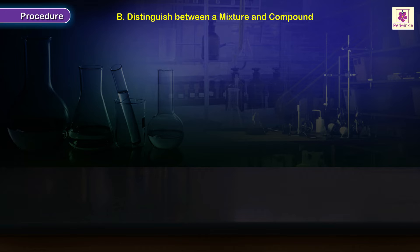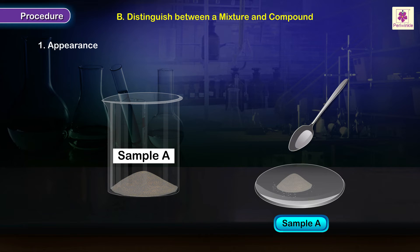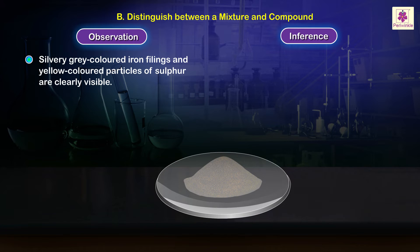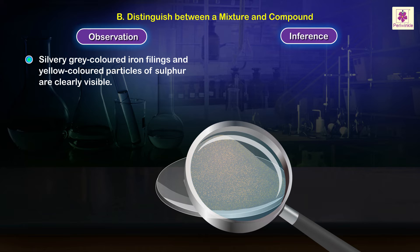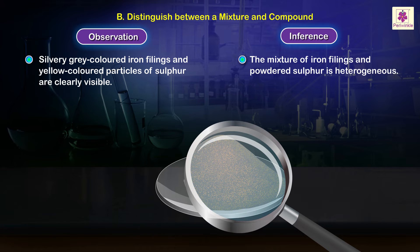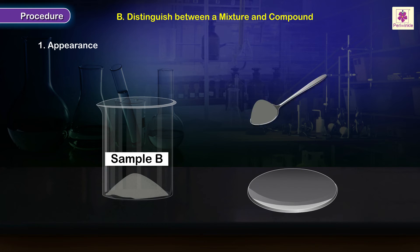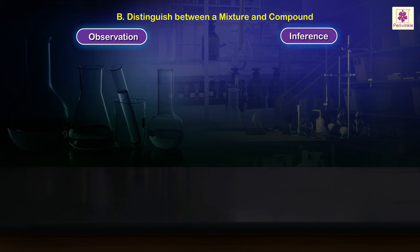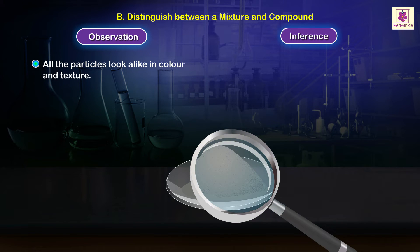Procedure to distinguish between a mixture and compound on the basis of appearance: take a spoonful of Sample A on a clean watch glass and observe with a magnifying glass. Observation: silvery-gray colored iron filings and yellow colored particles of sulfur are clearly visible — the mixture is heterogeneous. Take a spoonful of Sample B on a clean dry watch glass and observe. Observation: all particles look alike in color and texture — iron sulfide is a homogeneous substance.